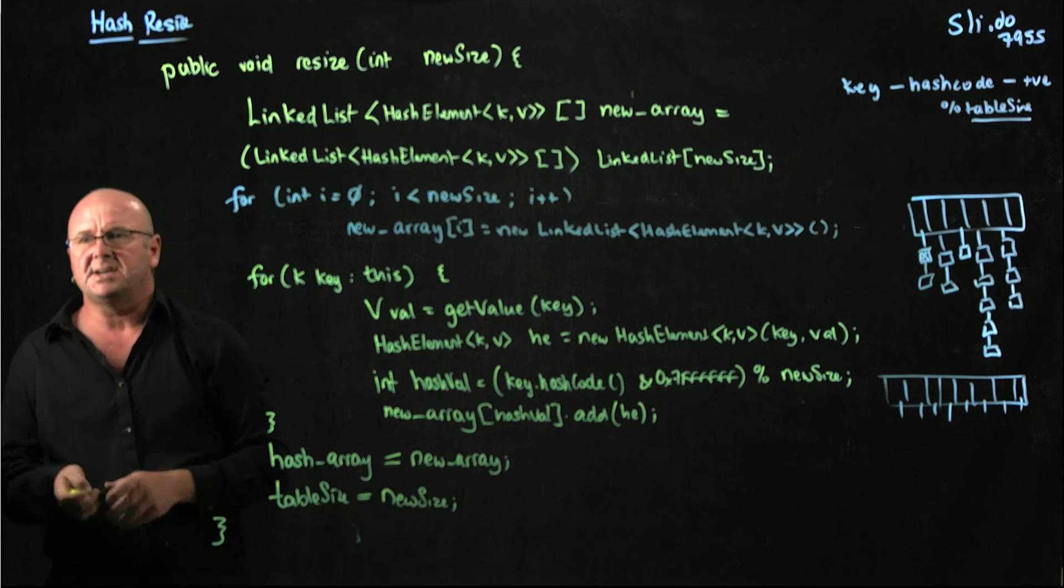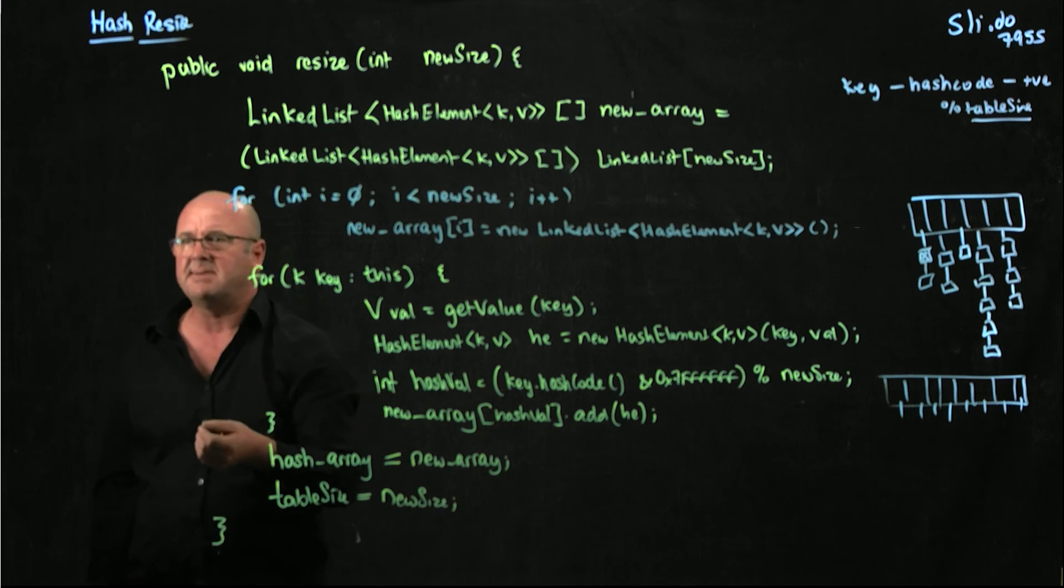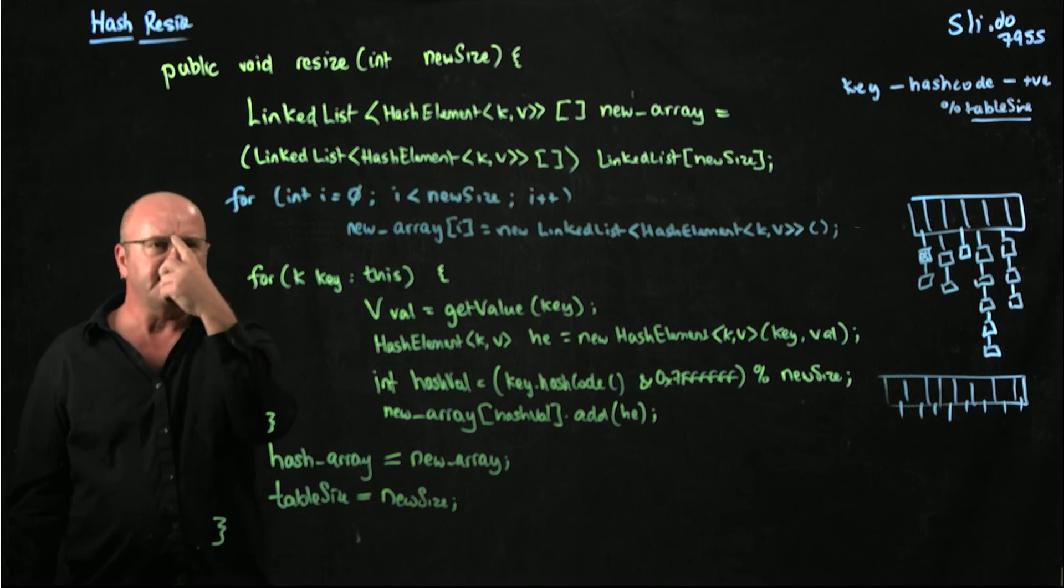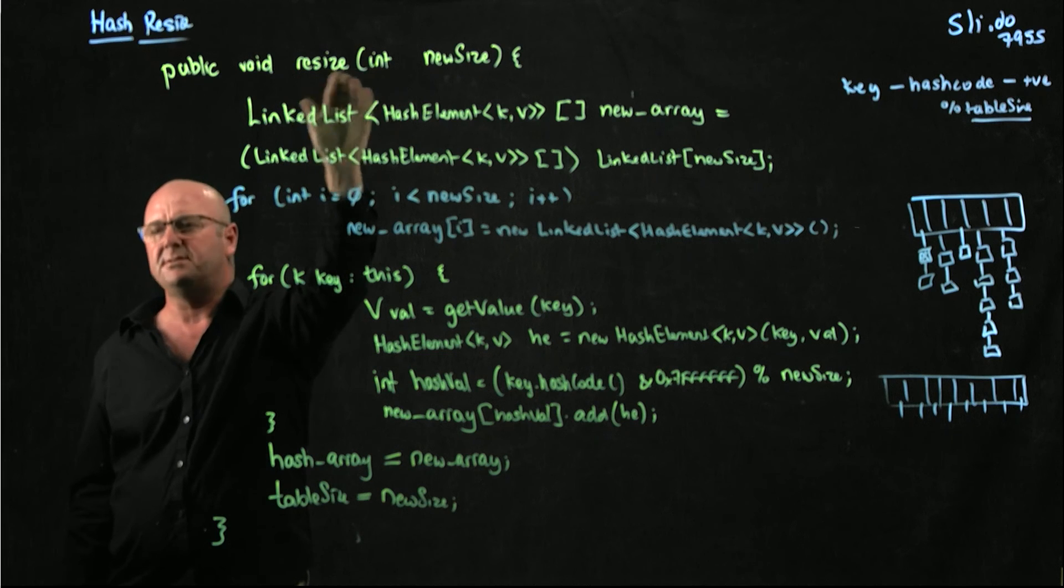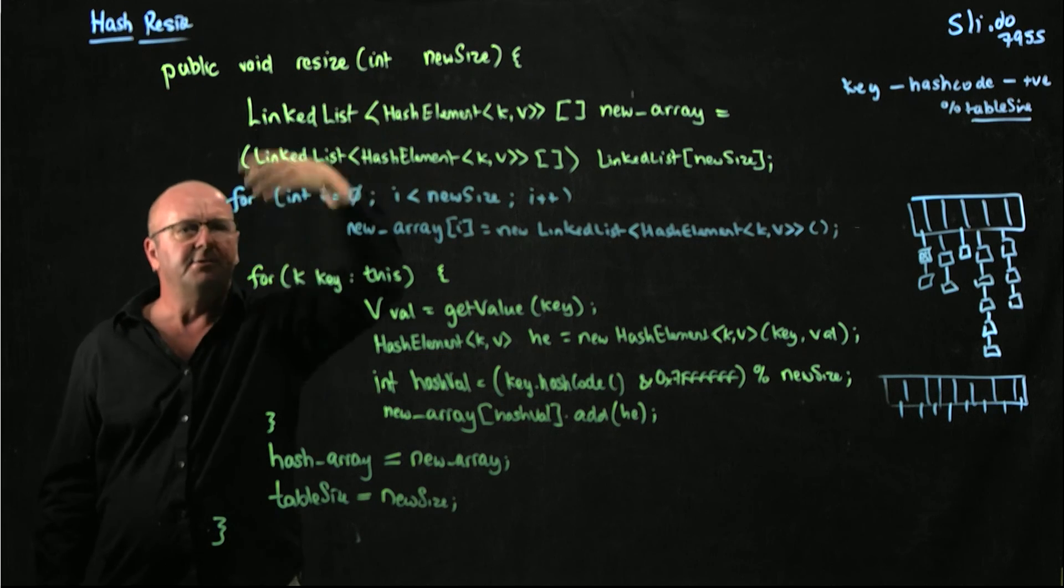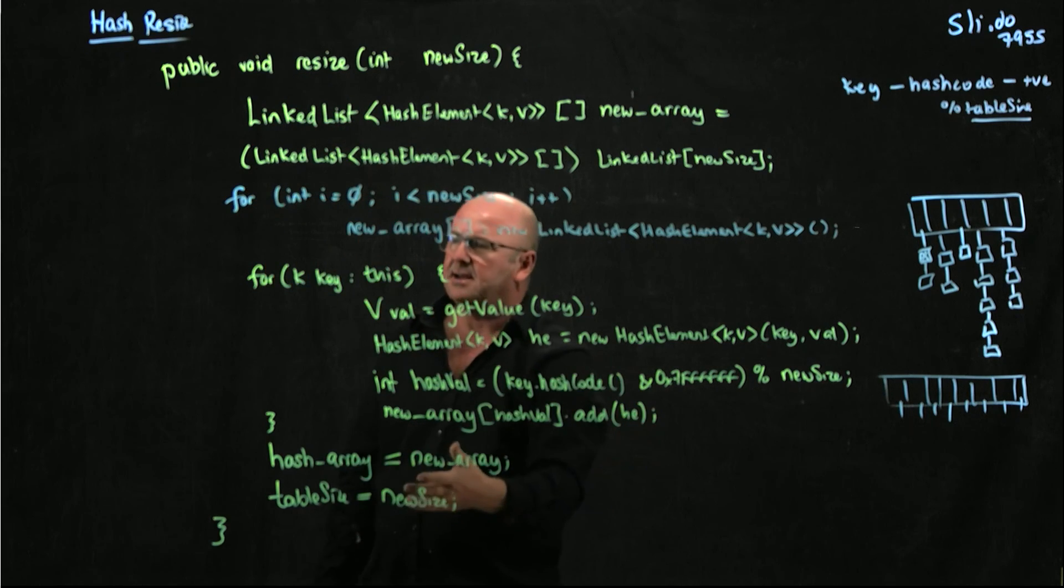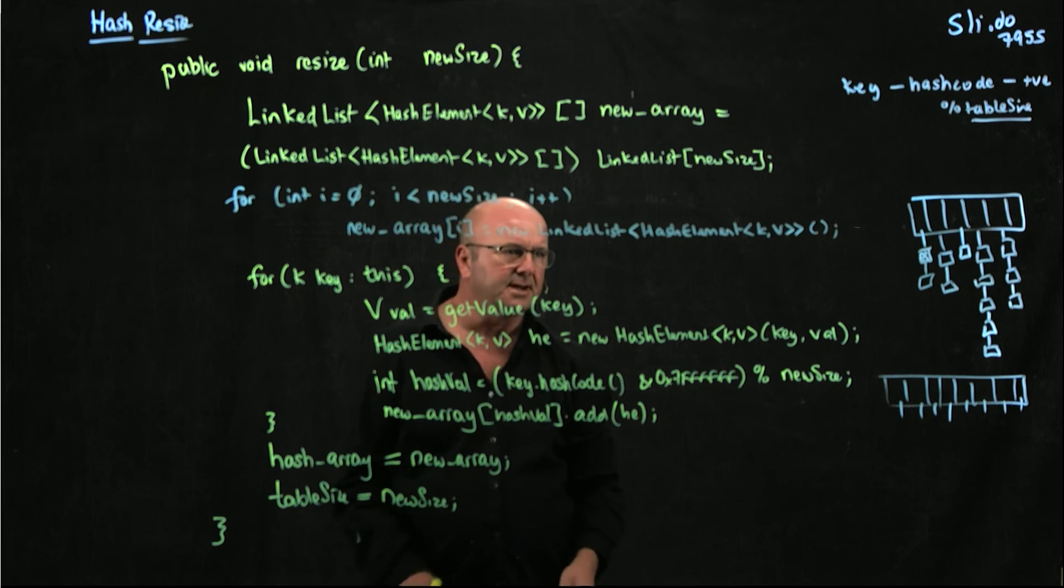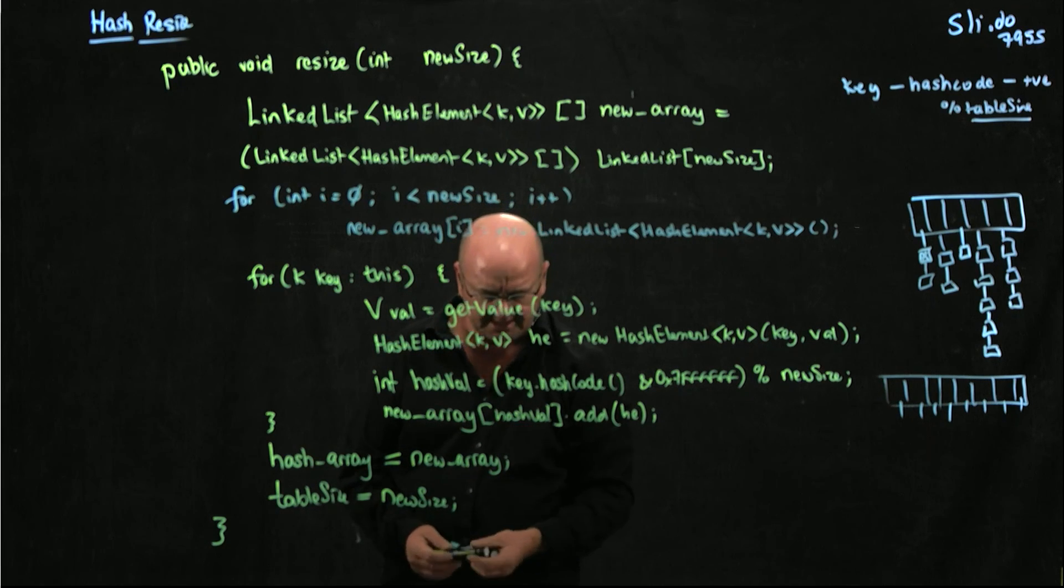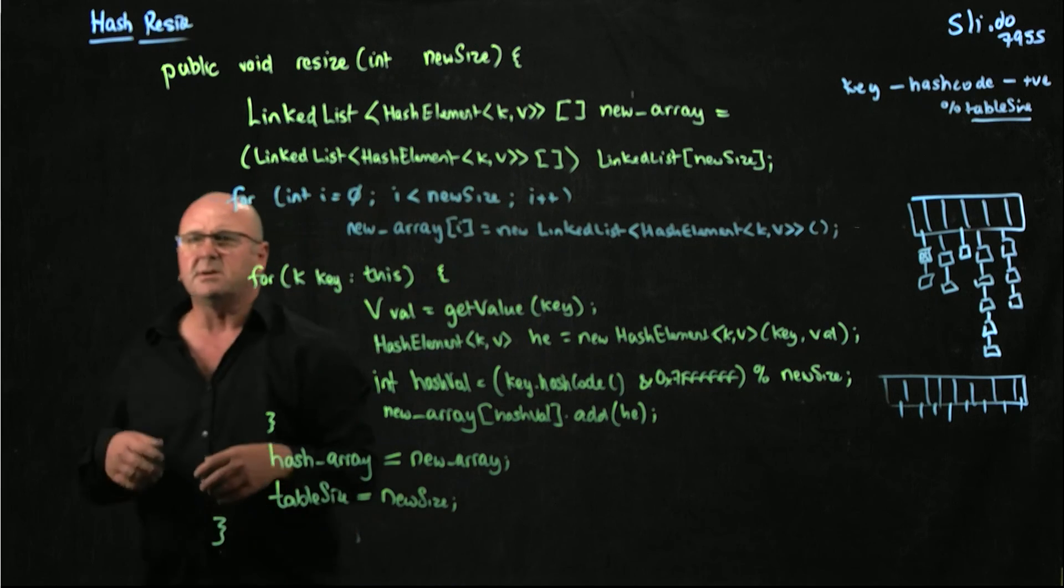So when we add things to the hash, we need to check the load factor, check whether it exceeds max load factor. If it does, we just figure out what we want the new size to be, probably twice the size of table size, and call resize. That will create a new array, it will move everything over, and it will return that new array populated with all the existing data.